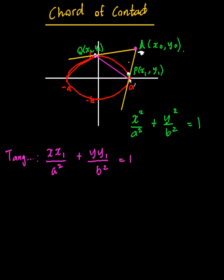But that's a tangent at point P. In the same way at Q I will end up getting x x2 on a squared plus y y2 on b squared is equal to 1 and this is at Q.